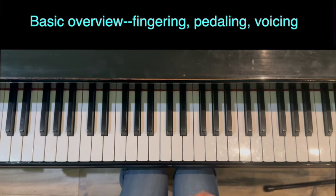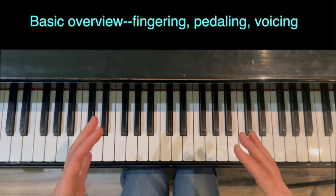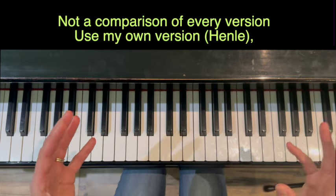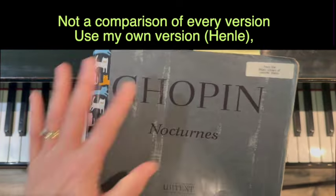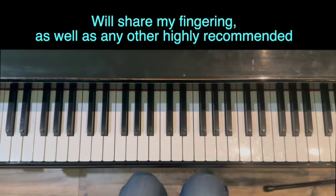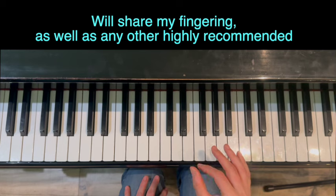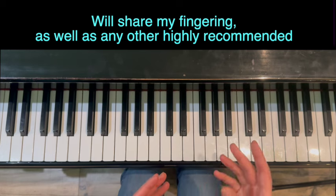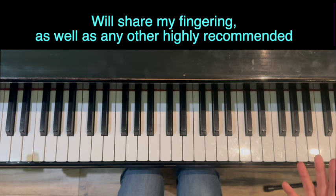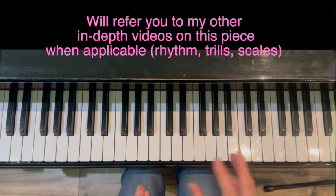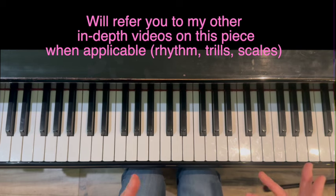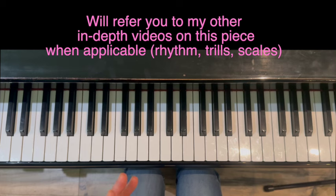It's not going to be super detailed. I'm not comparing a bunch of versions. I'm going to use my version from the Chopin Nocturnes Henle edition. I'm going to show you my fingering that I use and any other very recommended fingerings, but I'm not going to do a comparison of 10 versions of this piece. I will also lead you towards other videos I have of this piece. I have three videos on this piece that are quite detailed, so I will refer you to those videos during the piece when applicable. One of the videos is trills, one is rhythm, and one is scales at the end.